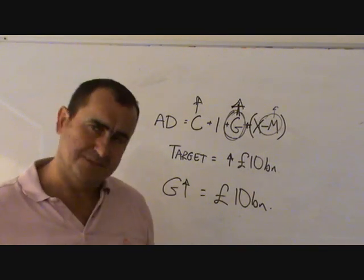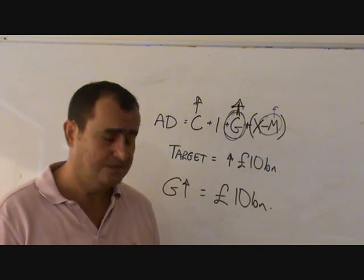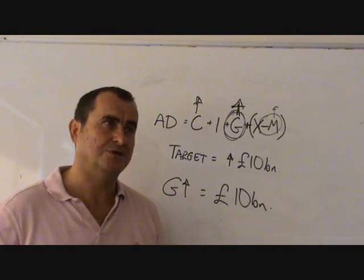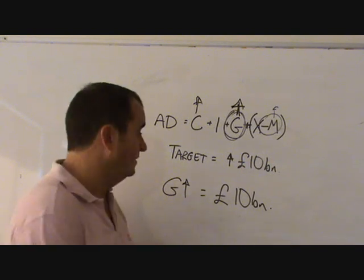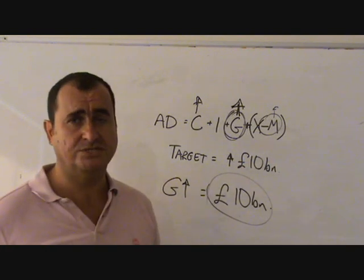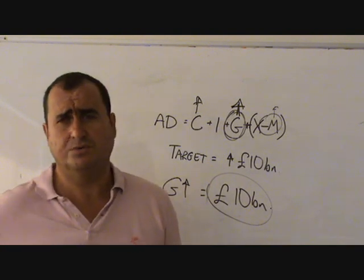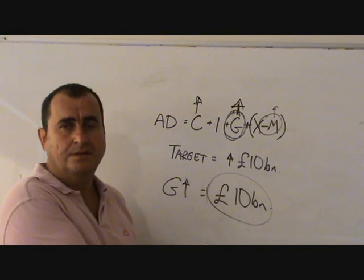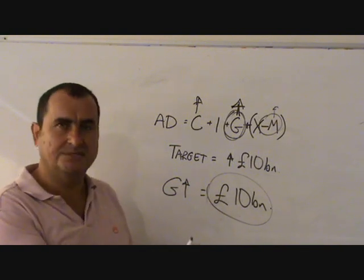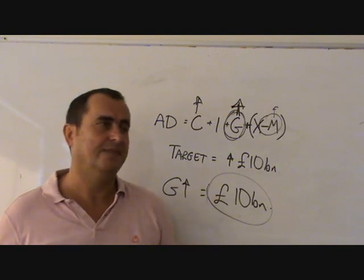Keynes said that this multiplier effect, difficult to calculate the size, difficult to calculate the speed at which this occurs. And it will be different if the government spends it on doctors' wages as opposed to spending it on a construction company to build a new motorway, which will probably be very slow. Depending on how the government spends its money, it's difficult to calculate the exact size and speed of this multiplier effect, but it will occur.